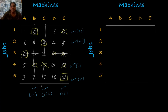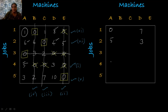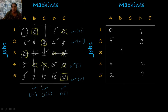Draw straight lines through all unmarked rows and marked columns. Choose the minimum element not covered by any straight lines from: 1, 8, 6, 4, 5, 3, 3, 10 — the minimum is 1. Subtract 1 from all uncovered elements: 1-1=0, 8-1=7, 6-1=5, 4-1=3, 5-1=4, 3-1=2, 3-1=2, 3-1=2, 10-1=9. Add 1 to the intersection points: 3+1=4, 2+1=3, 0+1=1.